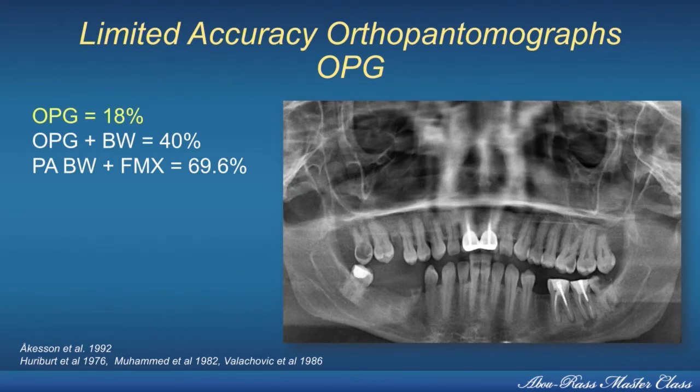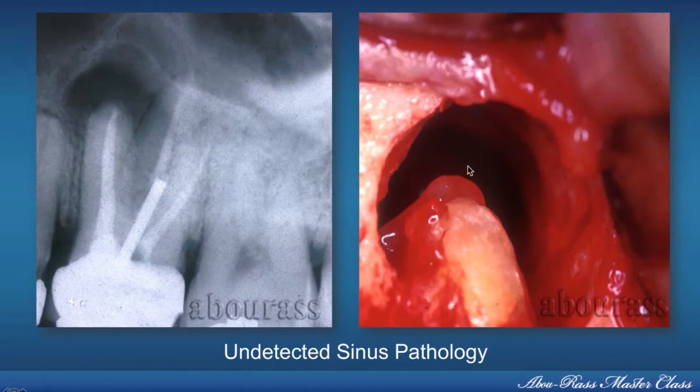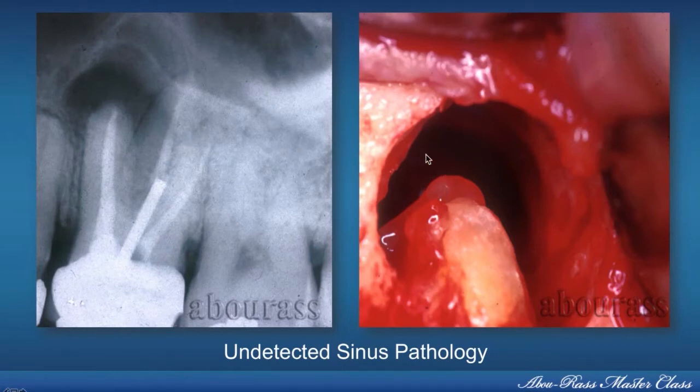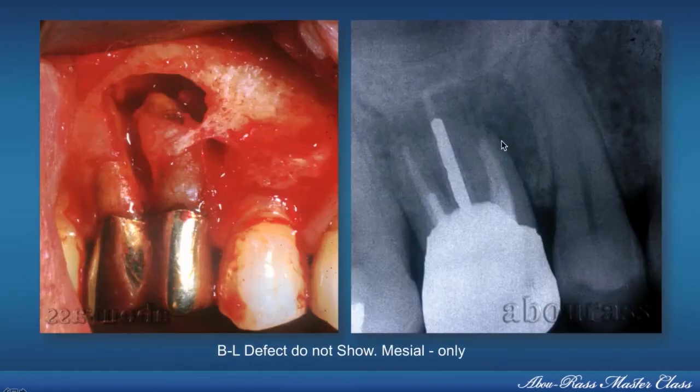The OPG is very limited in its accuracy. There are many issues that influence the radiographic appearance — what we see on the periapical radiograph, the OPG, or the bitewing. The unit goes into detail about the limitations of periapical radiography. Huge lesions could develop in the maxillary sinus and not show radiographically. Trabecular bone lesions do not show as well. Furthermore, the buccal-lingual defects do not show — we only see the mesials.